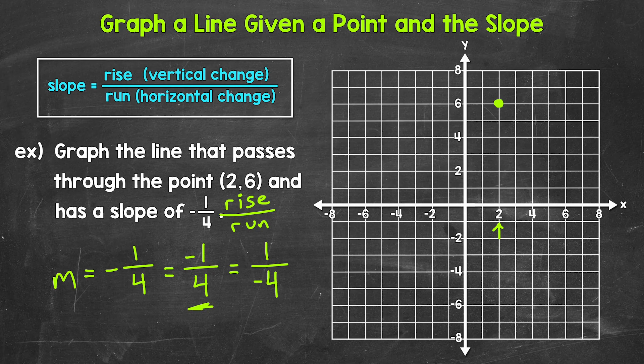So keep in mind, either of these will work and we'll actually do both in this video. The only thing you can't do is put a negative in the numerator and a negative in the denominator. That actually gives us a positive. Think, a negative over a negative, a negative divided by a negative, gives us a positive.